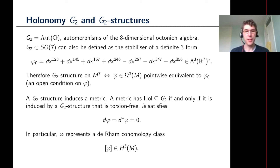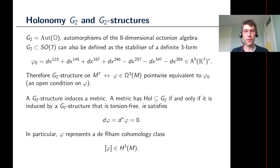Because G2 is a subgroup of SO(7), a G2 structure induces a Riemannian metric. The condition that the metric has holonomy contained in G2 can be rephrased as saying the metric is induced by a G2 structure satisfying the first-order PDE called the torsion-free condition. In terms of the three-form, this is written as the three-form being closed and co-closed. This is actually a non-linear PDE because the co-closed condition involves the metric, which itself depends on the three-form. Whenever you have a torsion-free G2 structure, it is in particular closed, so you can define a cohomology class in de Rham cohomology.